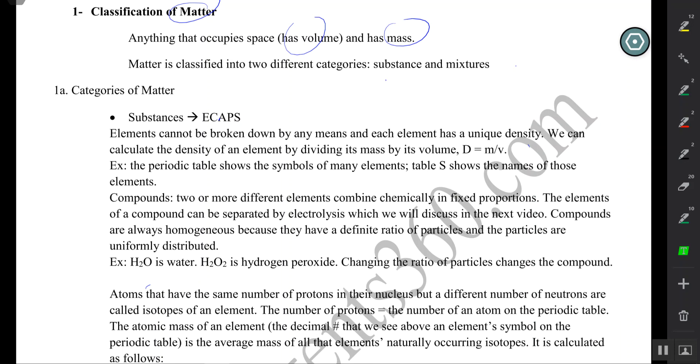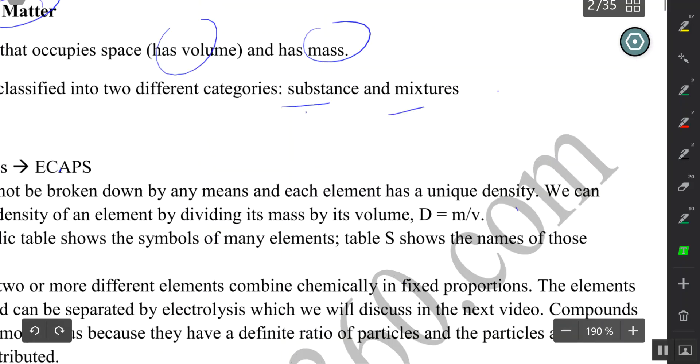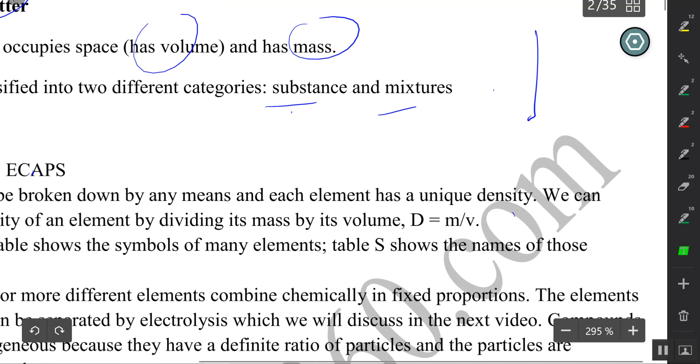Matter is classified into two major categories: substances and mixtures. So let's have two cabinets here. In one cabinet I'm going to have substances, S for substances. In the other cabinet I'm going to have mixtures, M for mixtures.